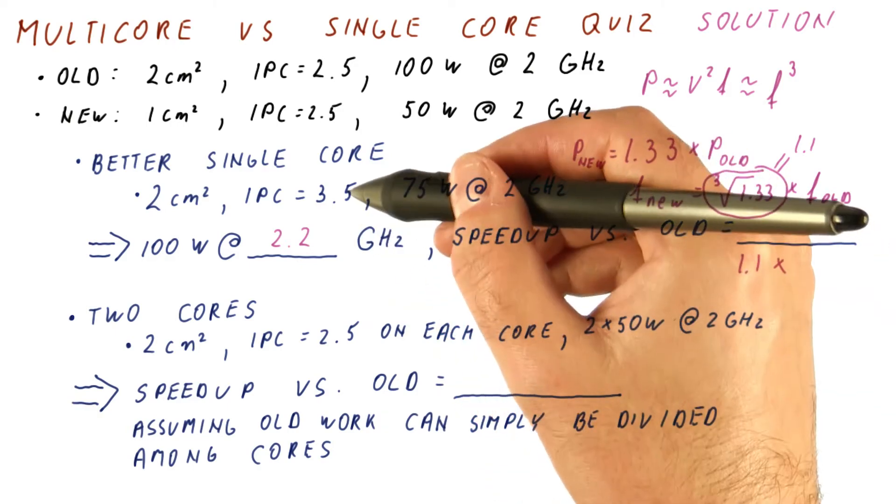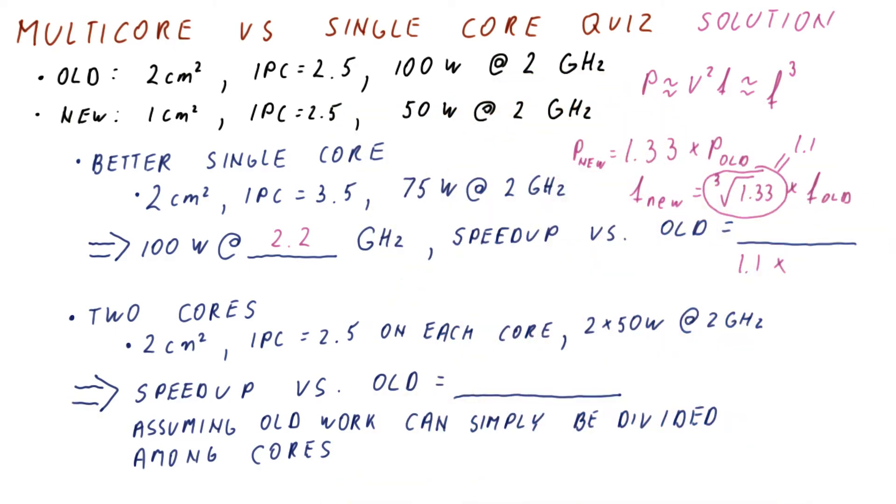Times the speedup we achieve because our IPC is better. And if we divide 3.5 by 2.5, we get a factor of 1.4.